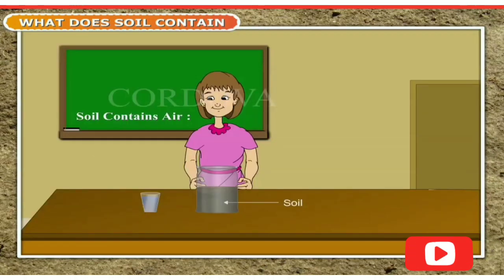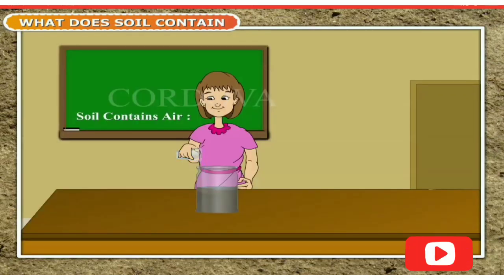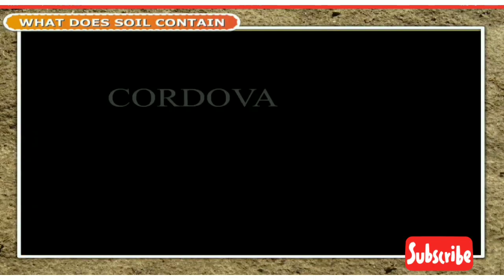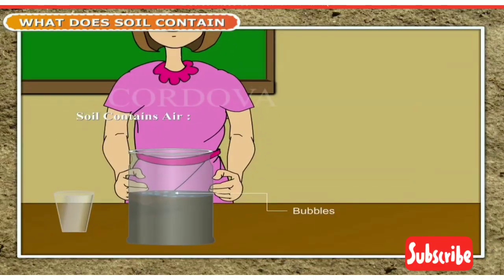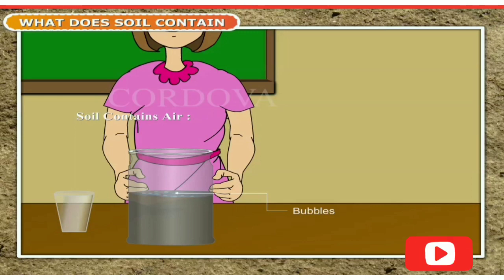Soil contains air. Take some garden soil in a jar. Pour some water over it. As you do this, you notice bubbles forming in the soil. This happens because the trapped air present in the soil escapes as bubbles. This shows that soil contains air.